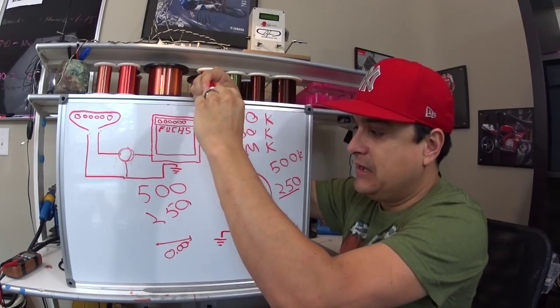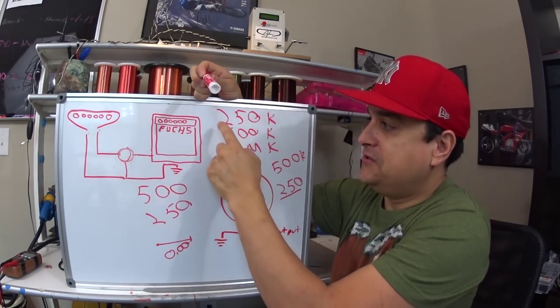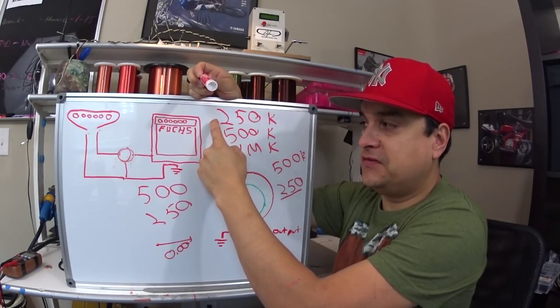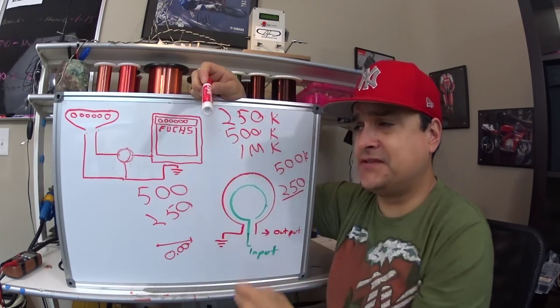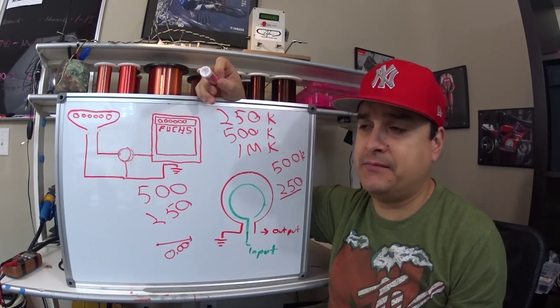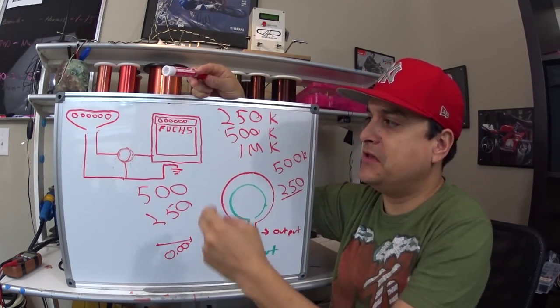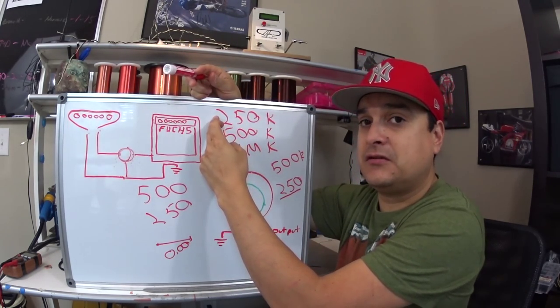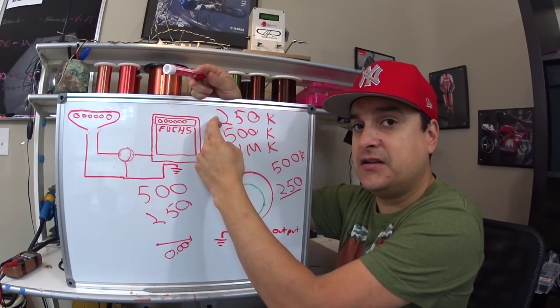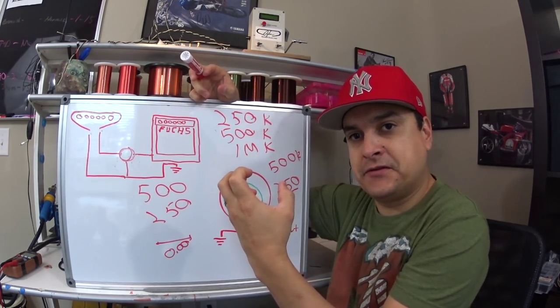That is why, commonly, a 250k pot is used for single coils. Because single coils are said to most of the time be more high frequencies, more tapered towards the high frequencies. So they use a faster resistance to ground, faster path to ground with a lower resistance pot to tame it down a little.